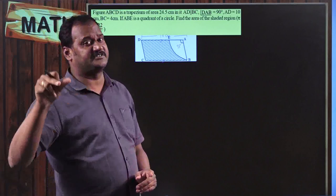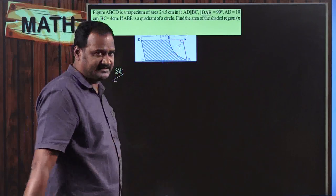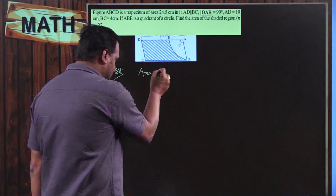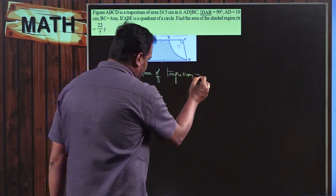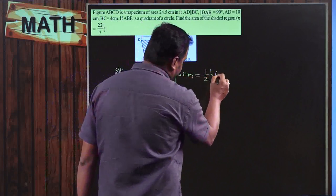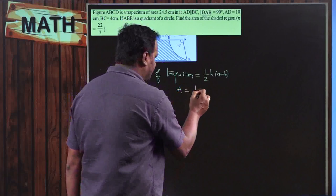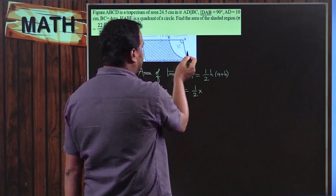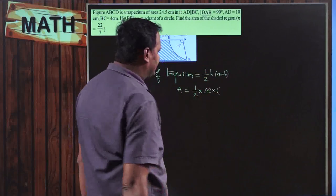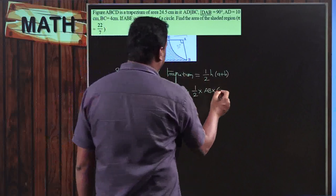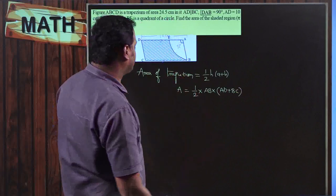AB is a part of the area of trapezium, so I am going to utilize the area of the trapezium in order to find AB. Area of trapezium is given. The formula for area of trapezium is: half × h × (a + b). The area was given as 24.5.